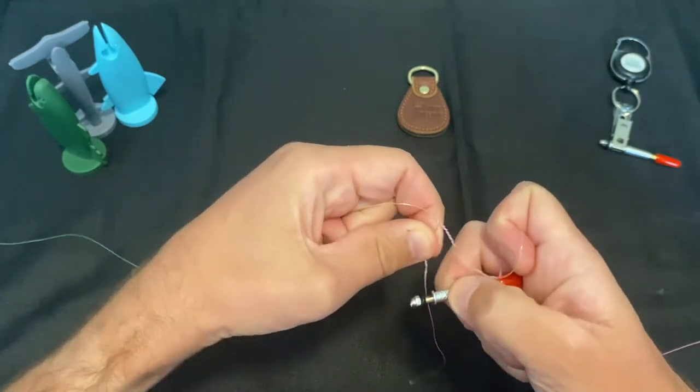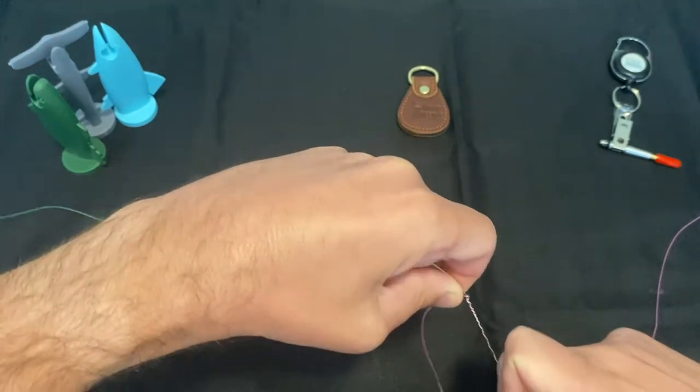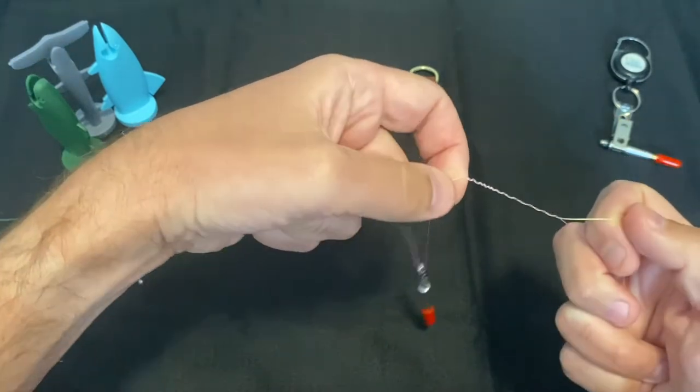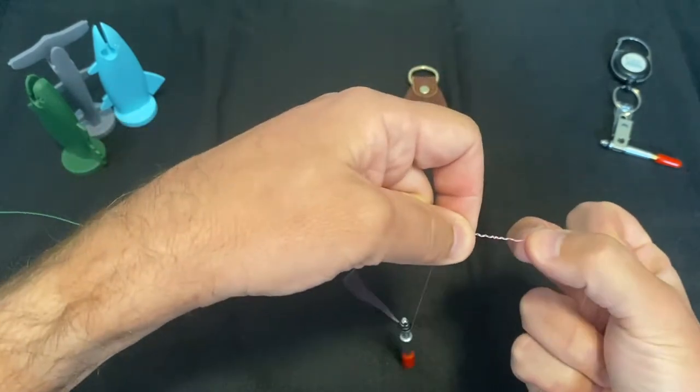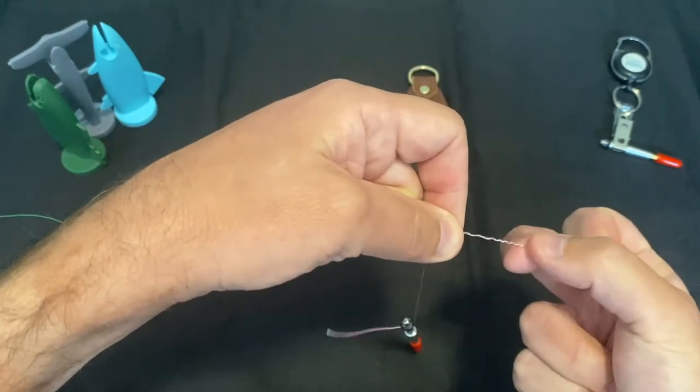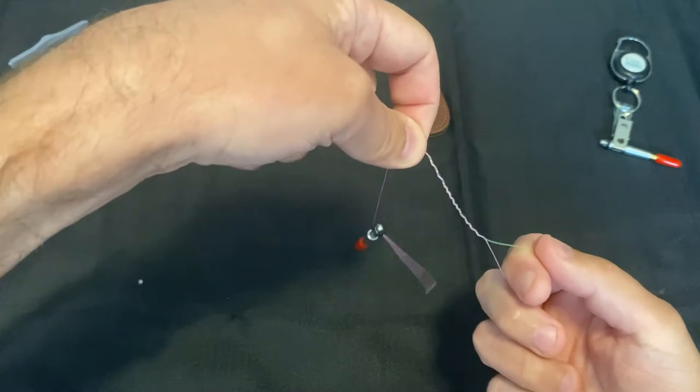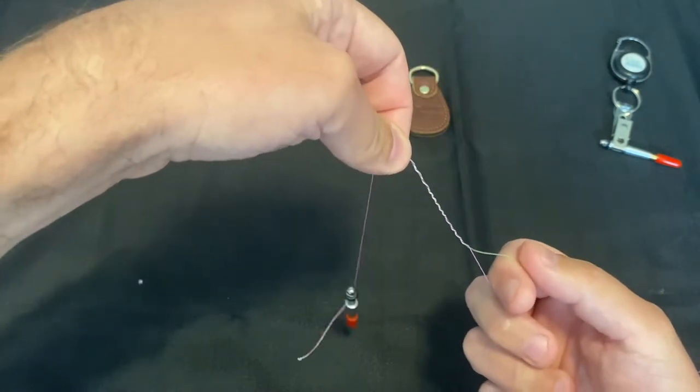Then slide the knot needle down so you have more room. Go in the same direction but this time move towards the loop. This is very similar to the Alberto knot. Do 12 turns.